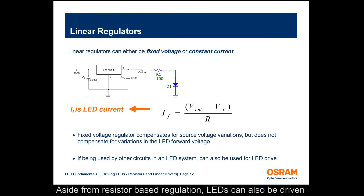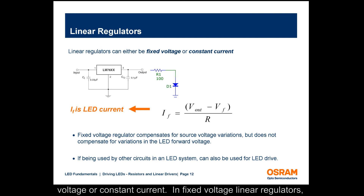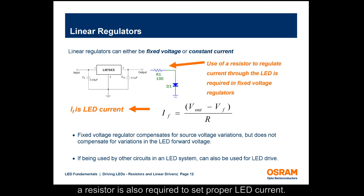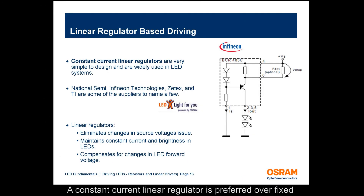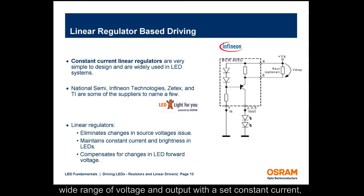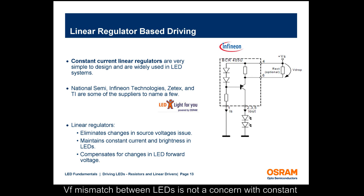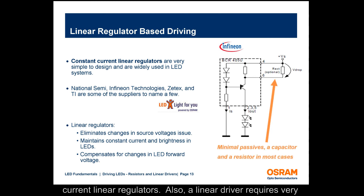Aside from resistor-based regulation, LEDs can also be driven using linear regulators. Linear regulators can either be fixed voltage or constant current. In fixed voltage linear regulators, a resistor is also required to set proper LED current. A constant current linear regulator is preferred over fixed voltage linear regulator because it can take a wide range of voltage and output with a set constant current, ideal for driving LEDs. Because the output is constant current, VF mismatch between LEDs is not a concern. Also, a linear driver requires very few passive components, in many cases only a resistor and/or a capacitor.